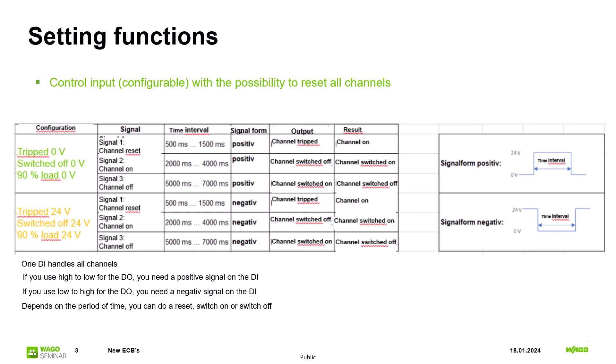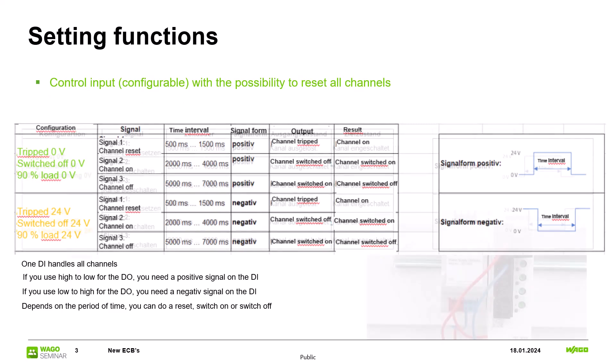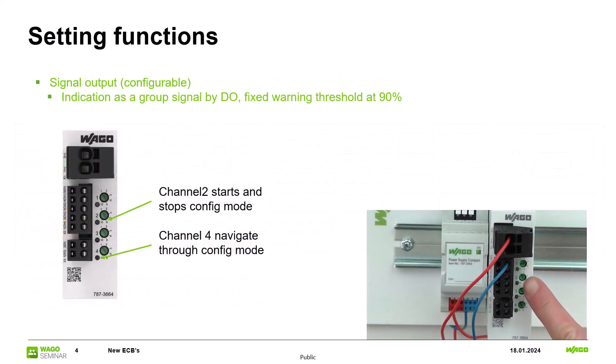Depends on the period of time you can do a reset, switch on or switch off. To set the signal output you need button number 2 and button number 4. To start and stop the configuration mode channel 4 navigates through the configuration. The digital output is a group signal which means that the settings always apply to all channels.